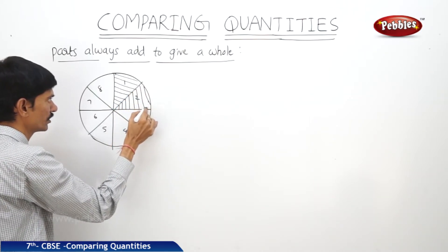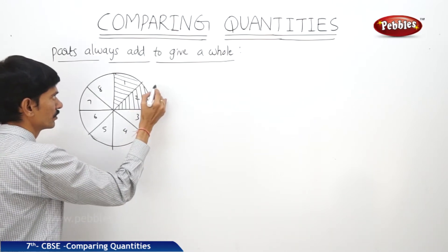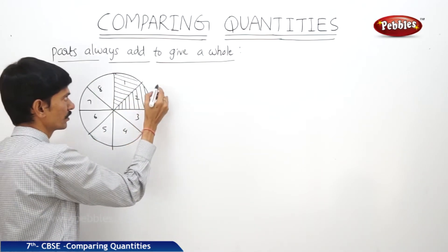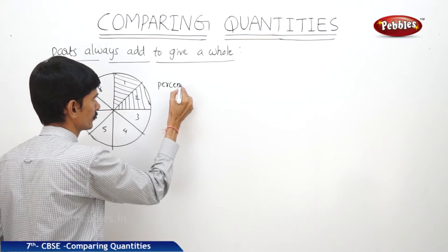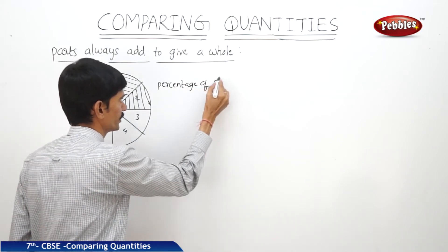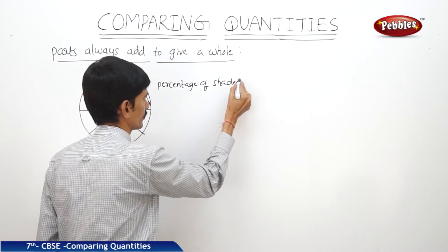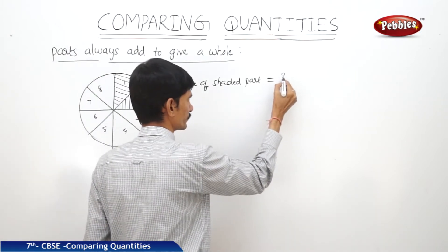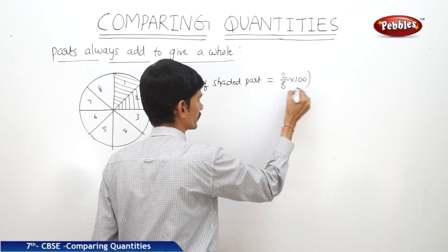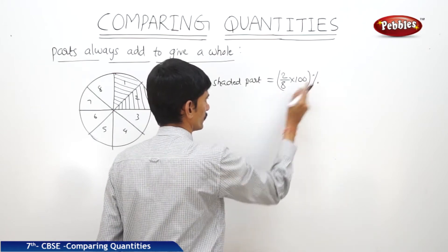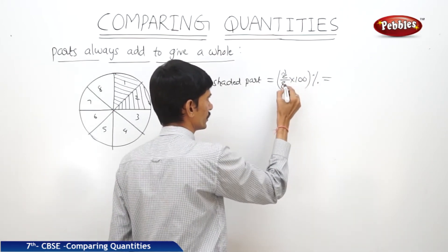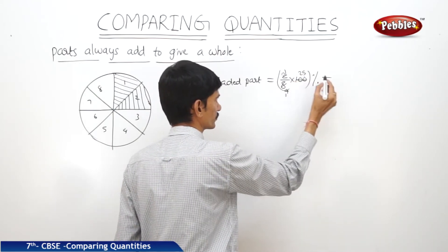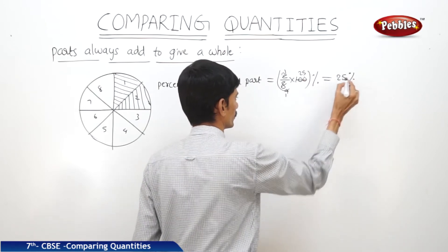How much percentage of the whole circle is shaded? The shaded part is 2 sectors out of 8 sectors. Percentage of shaded part equals 2 out of 8 into 100%. This equals 2/8 × 100, and since 2 fours are 8 and 4 twenty-fives are 100, this equals 25%.